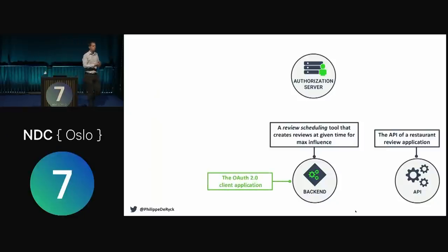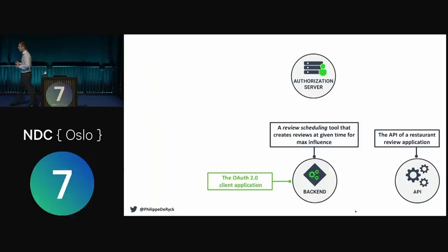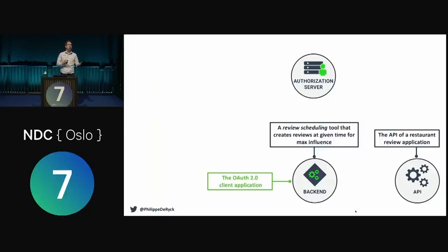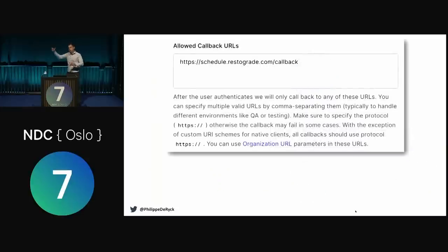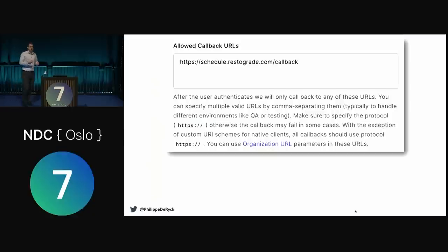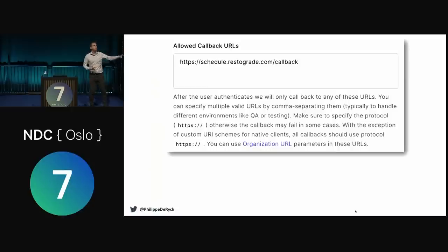This is an application trying to act on behalf of a user — it will go to the API at some point and say 'I want to post this review in the name of this particular user.' To set that up you register that client application, a back-end web app, with your authorization server. When you do that you have to enter a redirect URI — the callback. You specify when my interaction is done, I expect a callback at this particular endpoint, and you get an authorization code there. You have to register that value up front for security purposes.